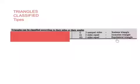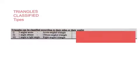Equilateral means all the laterals or sides are equal, and isosceles means two sides are equal. We can also classify them according to their angles. If all three angles are acute, then it's called an acute angle triangle.